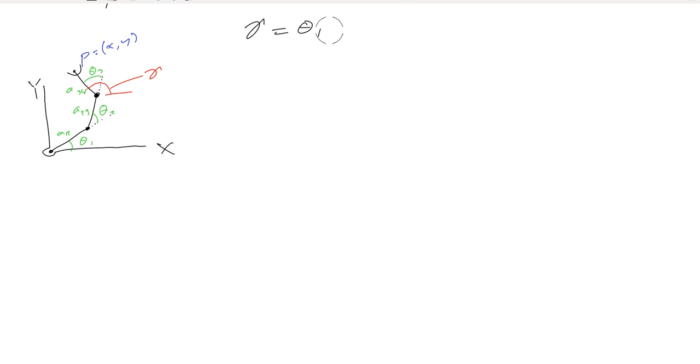And we want to find theta1, theta2, and theta3. And you're also given the link lengths. So here's the 3R robot. And this inverse kinematics problem is no harder than the 2R problem. Because all we do is we find the location of joint 3, and then we treat that as a 2R manipulator.